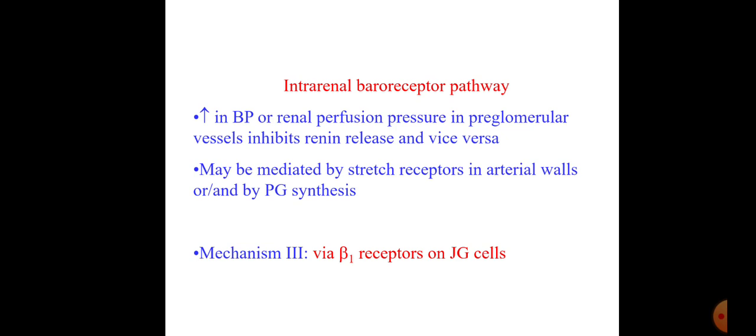The beta receptor pathway: beta-1 receptors are present in the JG cells. Beta-1 receptor stimulation increases renin release on sympathetic activation. So sympathetic activation leads to increased renin release via this beta-1 receptor stimulation. This is the mechanism by which renal secretion is regulated by different pathways.